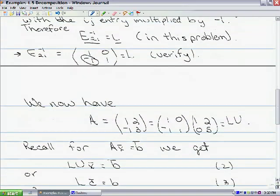So we now have A is equal to 1, 2, minus 1, 3, which is what we started with, and we have now decomposed that into L here, 1, 0, minus 1, 1, and U here, 1, 2, 0, 5.